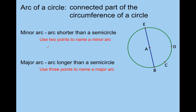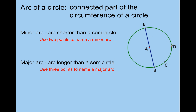Let's do another minor arc. How about this minor arc? That would be arc CD. And then how's the major arc named? That would be arc C and D on the ends with one other point as you go through — you can use B. Any other minor arcs? Sure — there's arc BD. And how do you name the major arc? That would be arc BED.